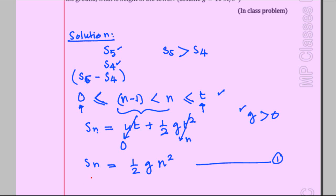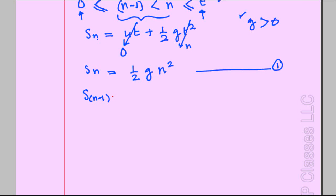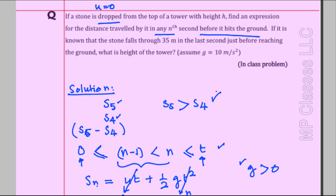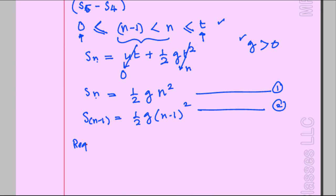Similarly, writing the expression for time n minus one: u is zero, so S_{n-1} = ½g(n−1)². This is equation two. Remember S5 > S4, so S_{n-1} is smaller than Sn. Therefore the required distance is Sn minus S_{n-1}, which equals equation one minus equation two.